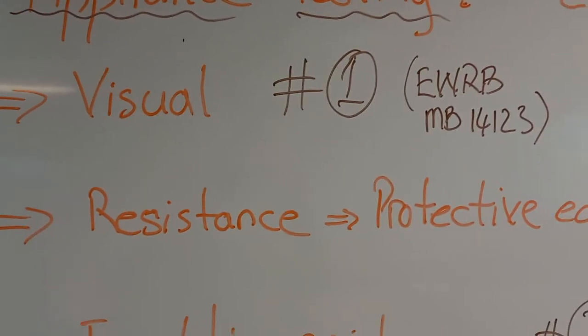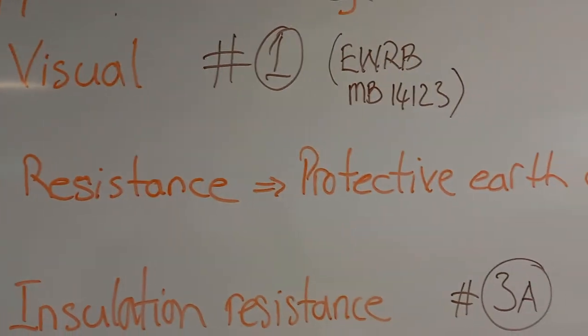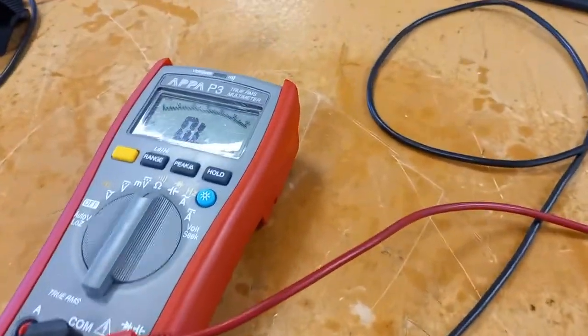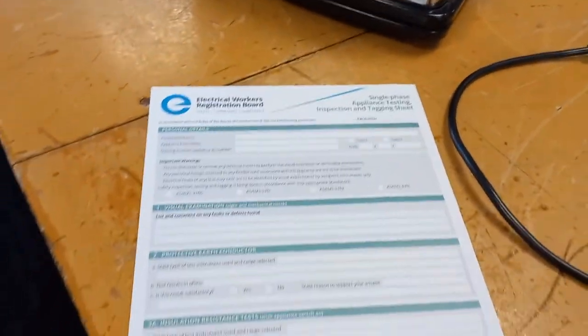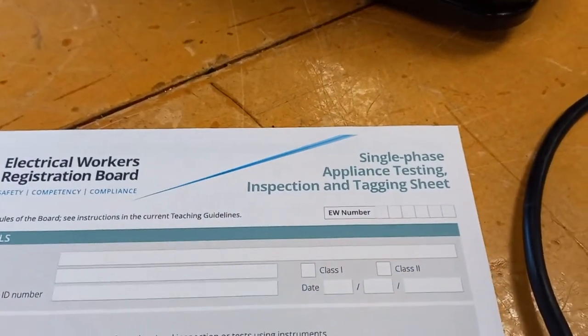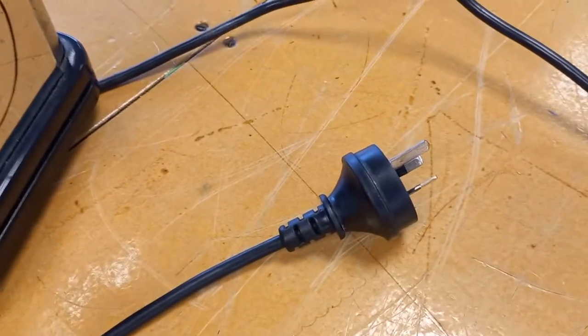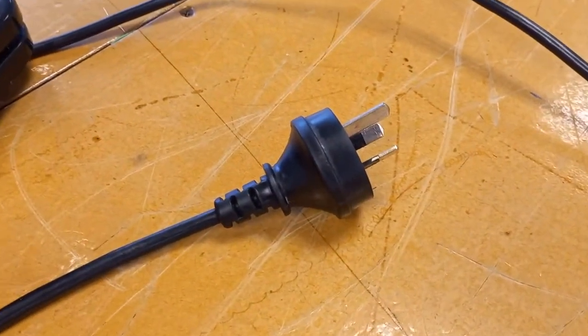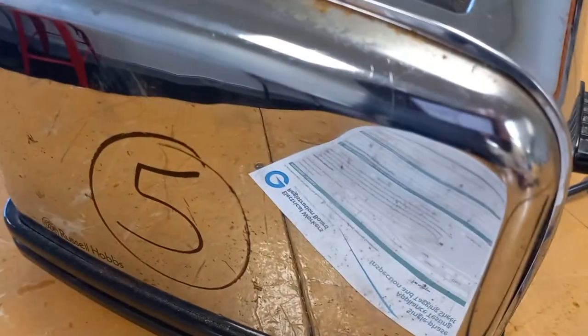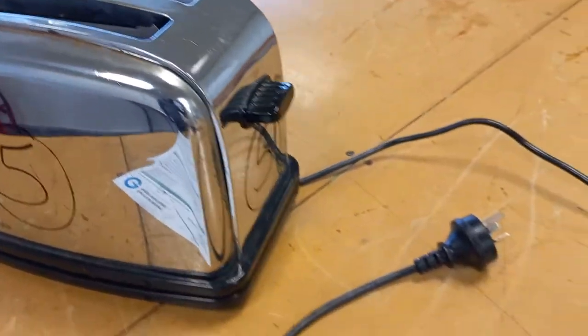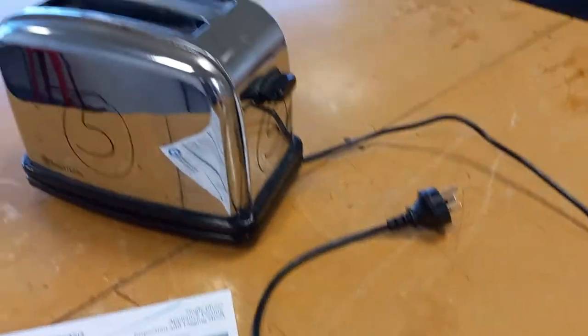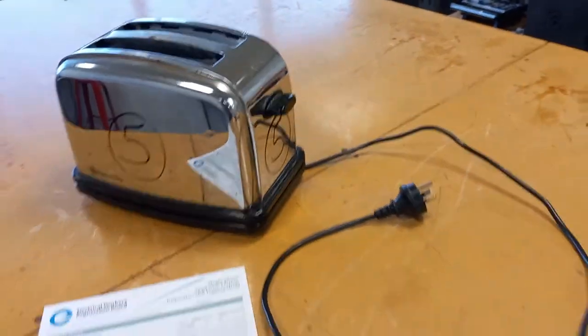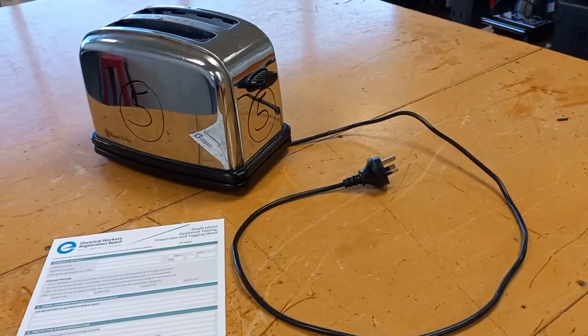Once that's complete, we move on to the resistance measurement of the protective earth conductor. This is done using an ohm meter on the low ohms range. The maximum resistance permitted by the EWRB on this training record form is 1 ohm. No more than 1 ohm is permitted from the earth pin on the plug to the metal casing on the Class 1 appliance. If that resistance is exceeded, the appliance is not safe and will fail the test. Typically, the resistance will measure about 0.1 of an ohm.